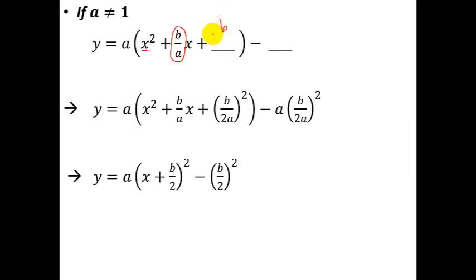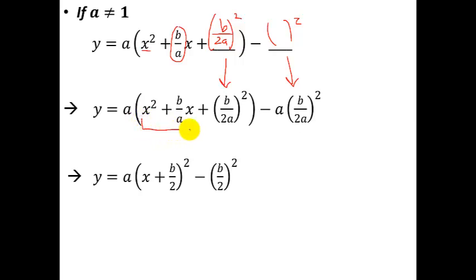And now the piece that you put here is, again, half the middle number. So once you factor the a out, it's still the same thing: half the middle number, which in this case is b over 2a — which is half of b/a — and then square it. You put the same thing on both sides. This part inside the parentheses is your perfect square, so it becomes your perfect square, and the a in the front stays as the a in the front.